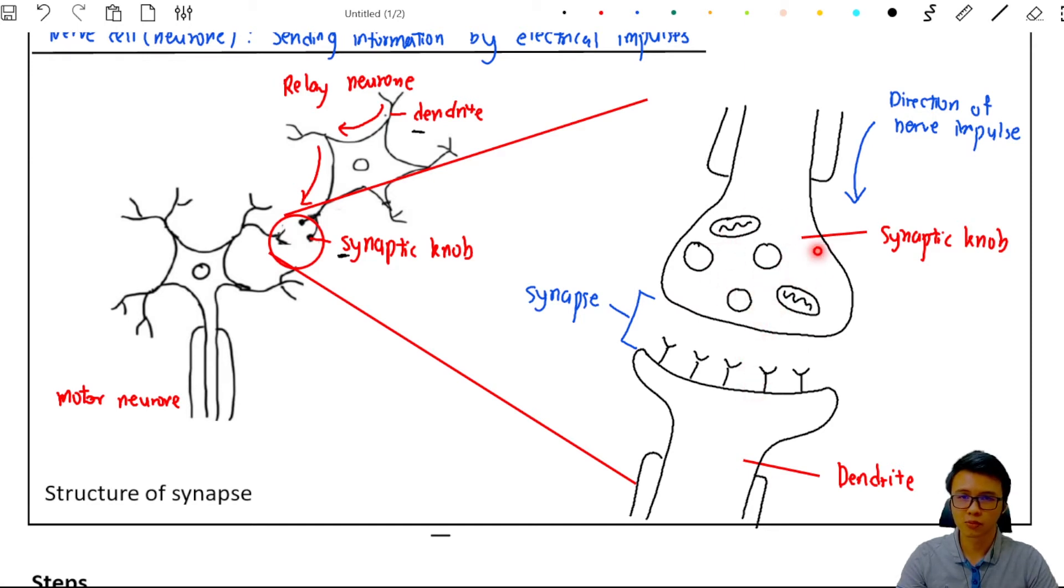So let's study the synaptic knob first. From what you can see here, we have two things inside the synaptic knob: the mitochondrion, and the second thing is the synaptic vesicle.